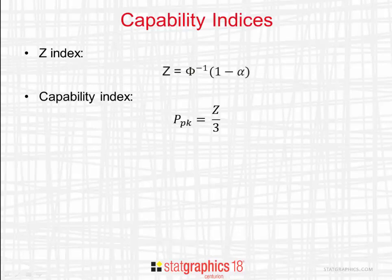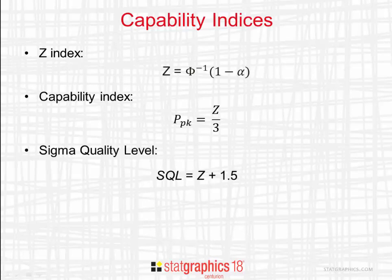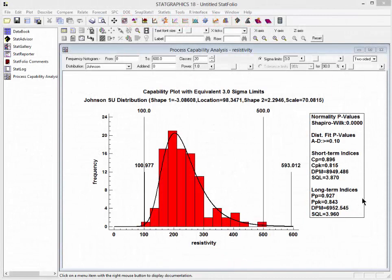I can also calculate the value of PPK by taking z and dividing it by 3. PPK is a very popular measure often used to assess process capability. If I take z and add 1.5, I get a statistic called the sigma quality level, which is a measure used a lot in six sigma programs. If a process has an SQL of 6 or greater, it's said to produce a product with world-class quality. Here you see several important values: PP is 0.927, PPK is 0.843, and SQL is 3.96.